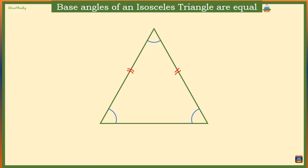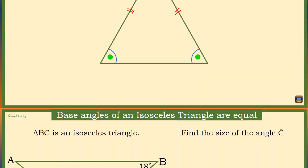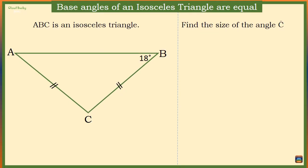We know that in any isosceles triangle, the base angles are equal. In this video, we are looking at how to find the missing angles in an isosceles triangle. In this isosceles triangle ABC, angle B is given as 18 degrees.